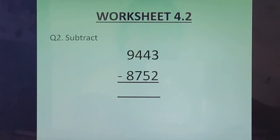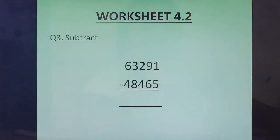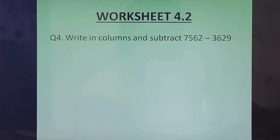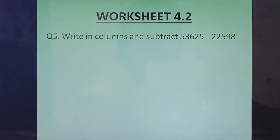Question 2: Subtract 9443 minus 8752. Question 3: 63291 minus 48465. Question 4: Write in columns and subtract 7562 minus 3629. Here they have told us to write in columns and given the number sentence form, so we know which number comes first. You just have to write one below the other. Question 5: Write in columns and subtract 53625 minus 22598. This question is similar to the previous one.